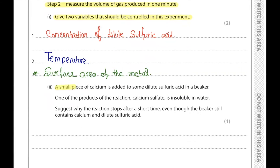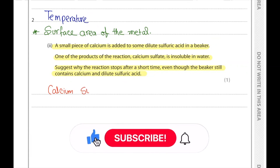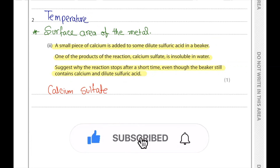Part 2. A small piece of calcium is added to dilute sulfuric acid in a beaker. One product, calcium sulfate, is insoluble in water. Suggest why the reaction stops after a short time even though calcium and dilute sulfuric acid are still present. The calcium sulfate formed in the reaction is insoluble and forms a layer around the calcium metal, preventing further contact between the calcium and the acid.